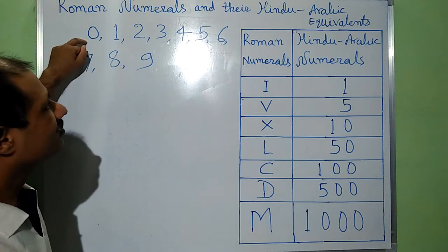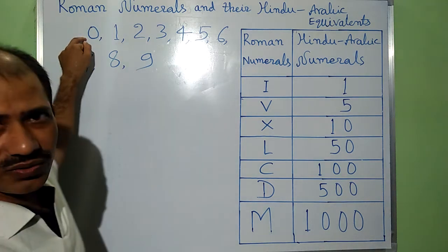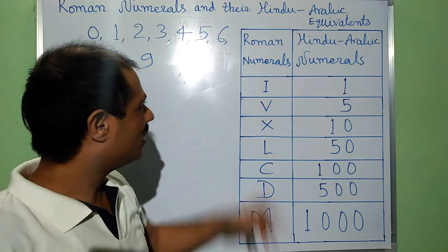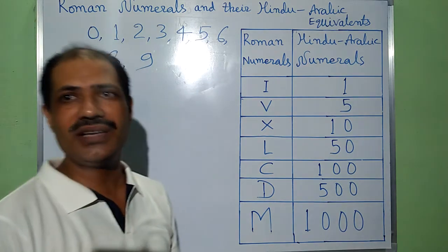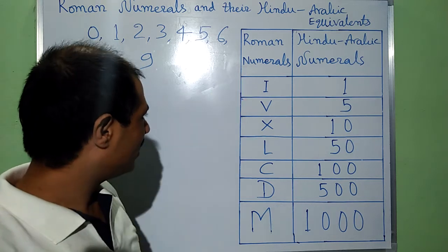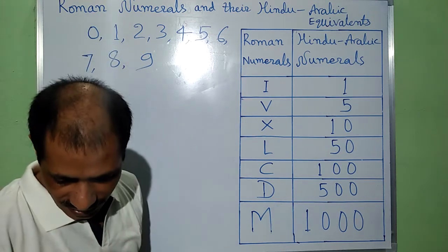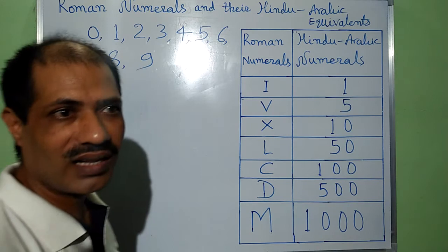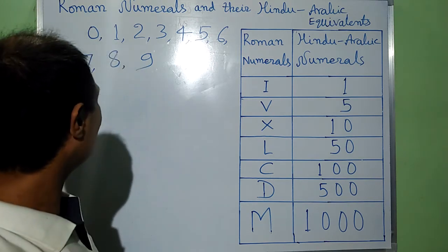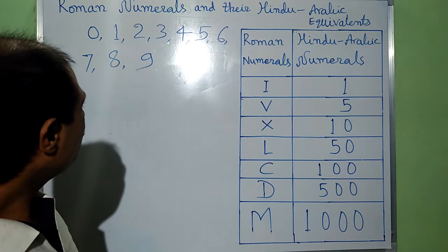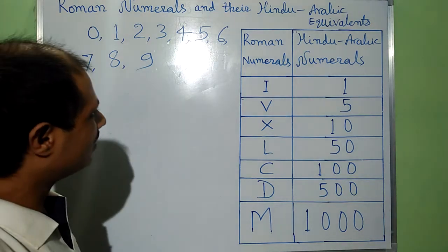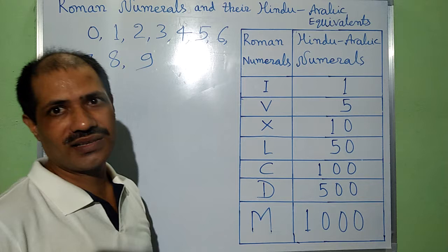Zero exists in Hindu-Arabic numerals, but there is no symbol for 0 in Roman numerals. Now I am going to explain some rules with the help of which we can represent and create other numbers in Roman numerals.